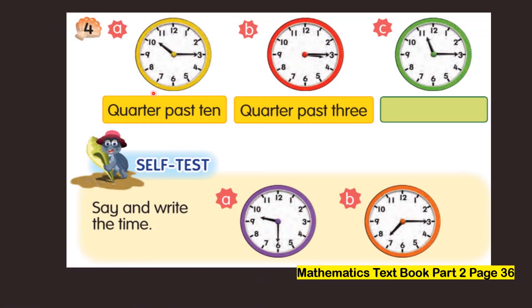Okay class, look at this clock face. The hour hand points to number ten and the minute hand points to number three. From twelve to three is a quarter of an hour, so the time is quarter past ten.